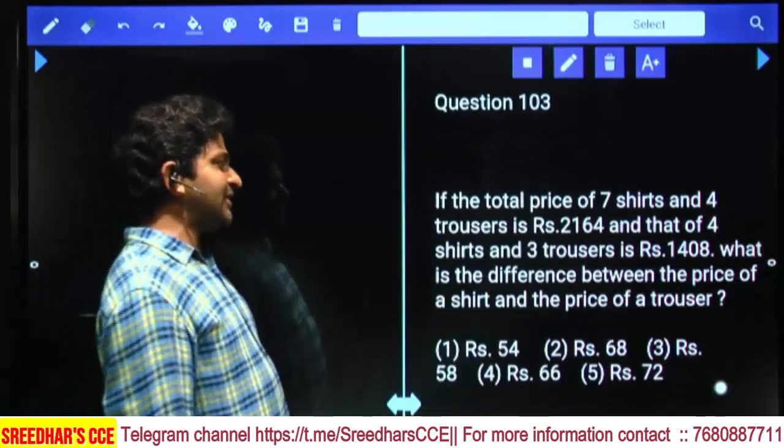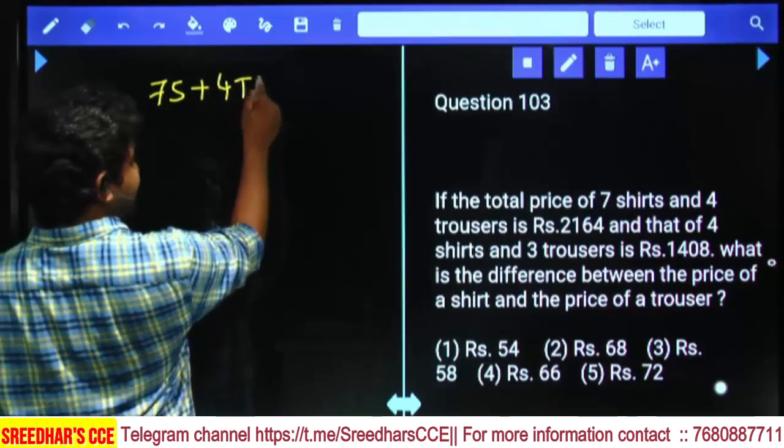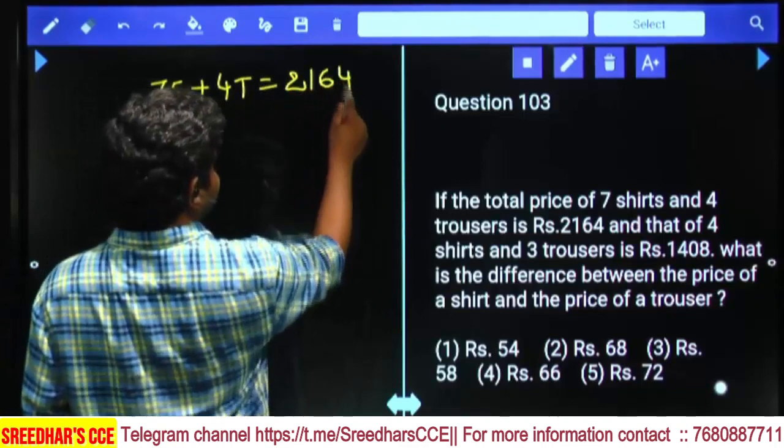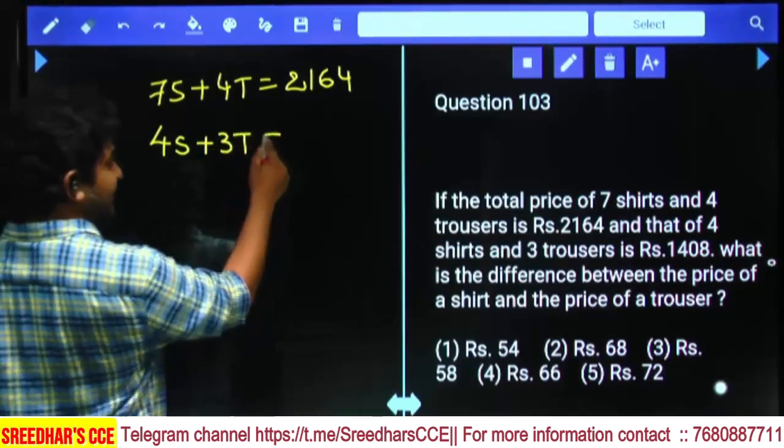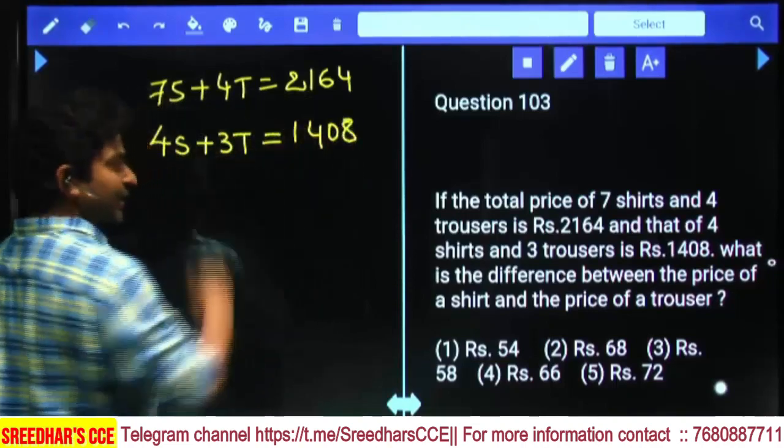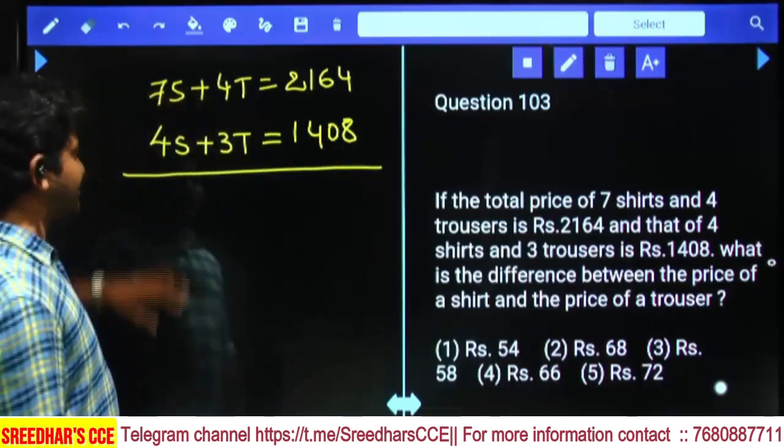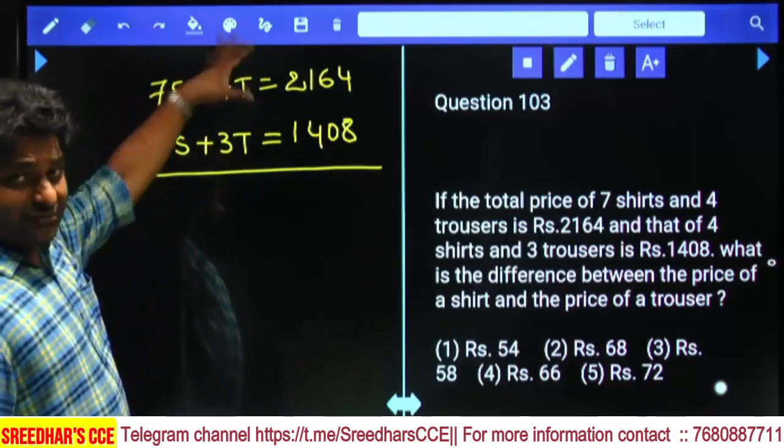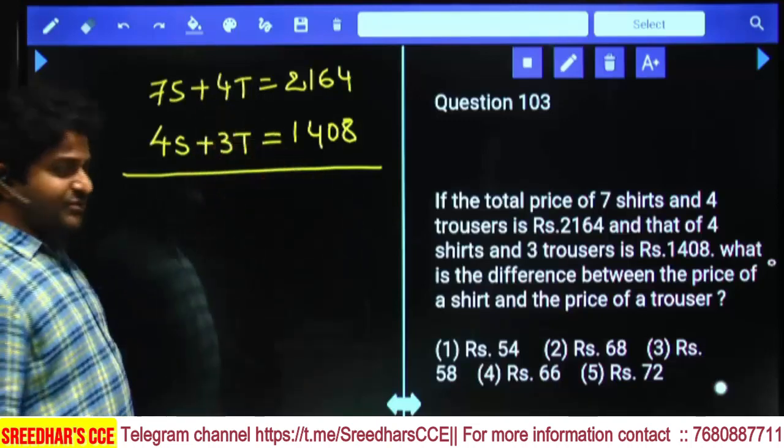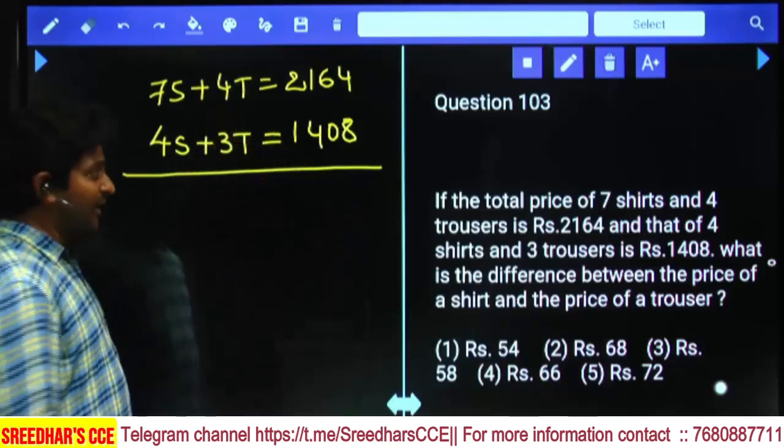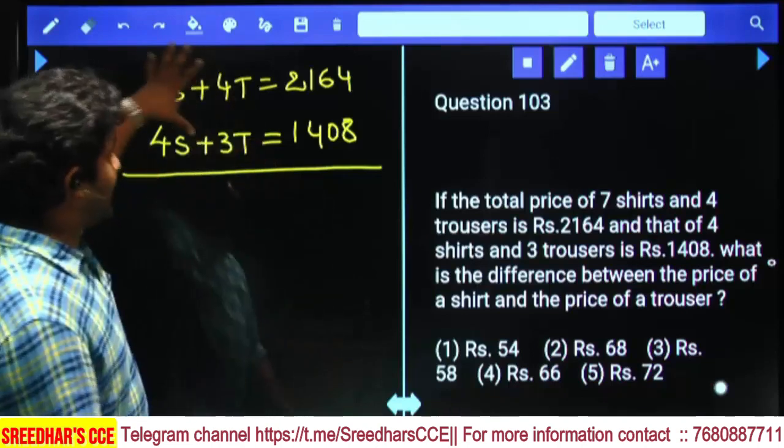If the total price of 7 shirts and 4 trousers is 2164, and 4 shirts and 3 trousers is 1408, what is the difference between the price of a shirt and the price of a trouser? Using two linear equations we need to solve. This question takes some time, better to skip otherwise. Let me show you how to calculate.